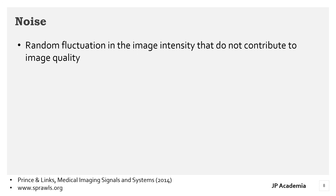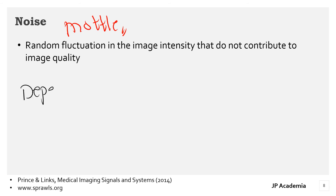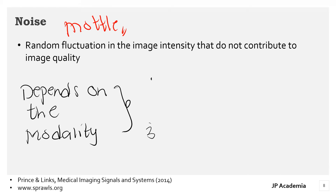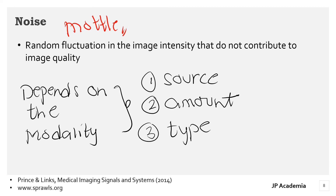Image noise, sometimes referred to as image mottle, gives an image a textured or grainy appearance. Object visibility is often reduced by the presence of noise because noise usually masks image features. In medical imaging, nuclear medicine images tend to have the highest noise. The source, amount, and type of noise depend on the imaging method.